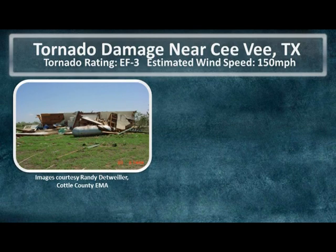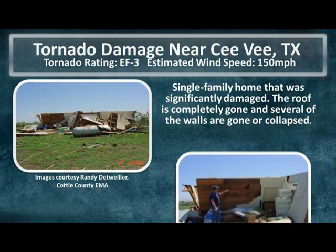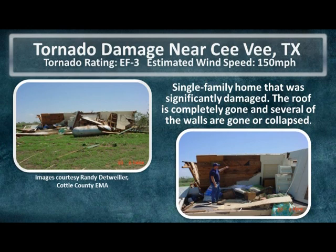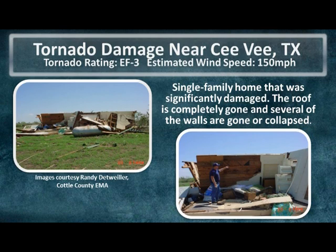I'm going to end this training session with a few pictures of tornado damage from a tornado that occurred near CV, Texas. This tornado was rated an EF3 and had estimated wind speeds of 150 miles per hour. At one point the tornado was three-quarters of a mile wide and it traveled mostly over fields of juniper and mesquite, hitting a few structures. As you can see with this single family home, the roof was ripped off, thrown, and completely destroyed, as were several of the walls. A tornado can also pick up a vehicle and throw it. These are all incentives to stay out of the path of a tornado and maintain a safe distance.